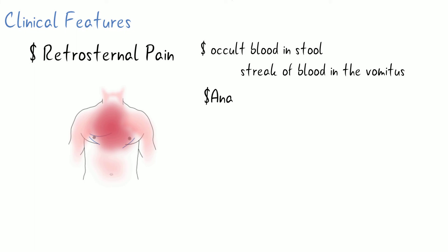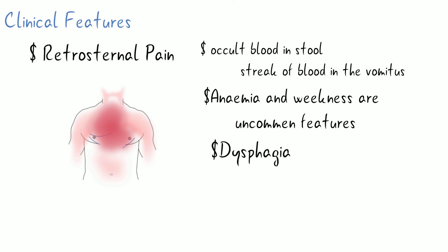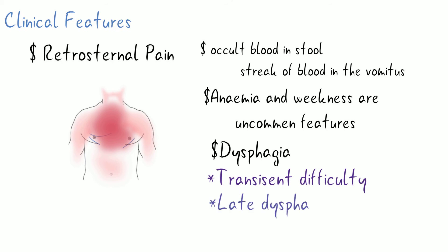Anemia and weakness are uncommon features. Dysphagia in this disease is of two types: transient difficulty due to spasm from inflammation of the lower end of the esophagus, or late dysphagia due to stenosis or stricture of the esophagus.